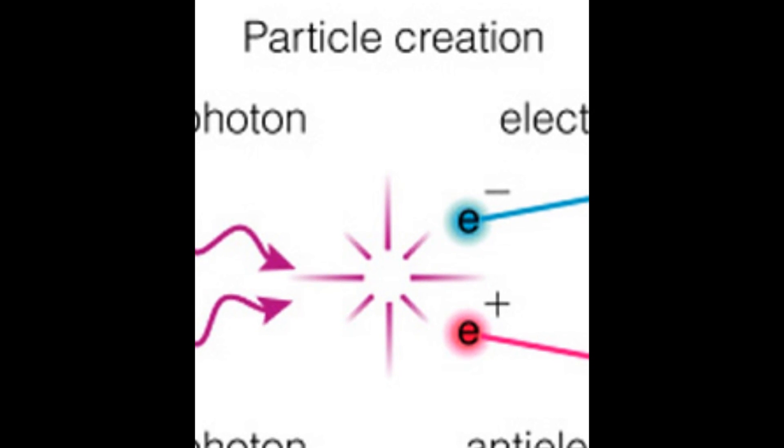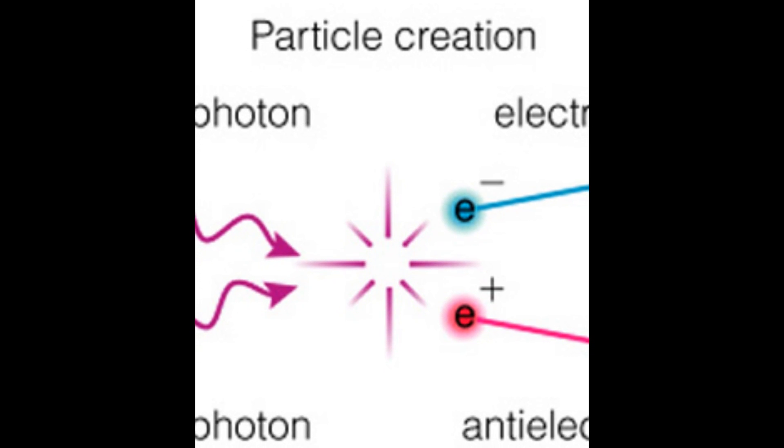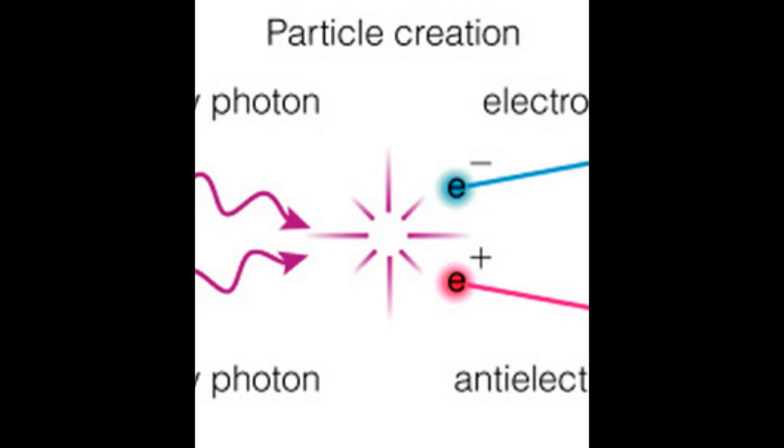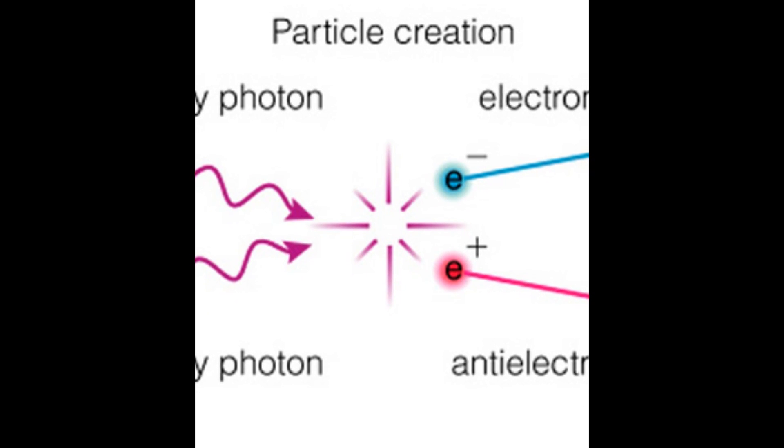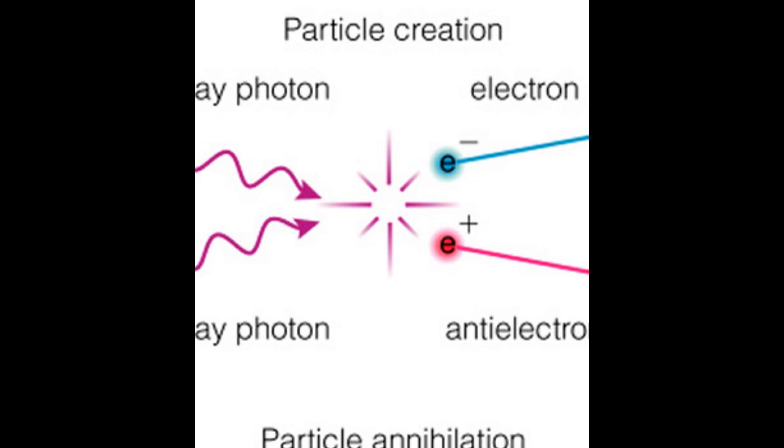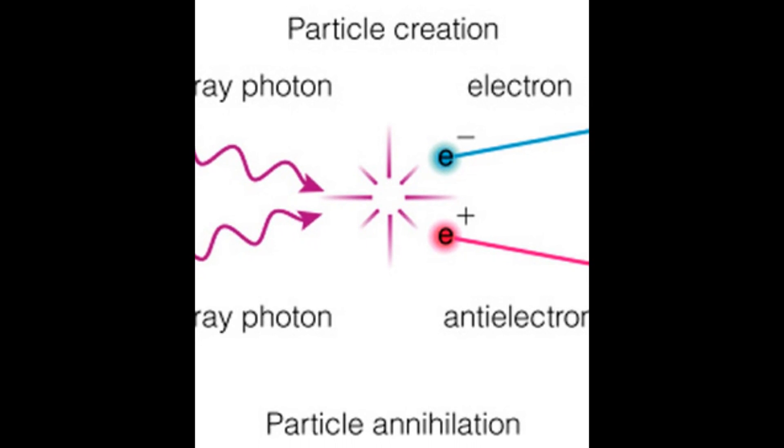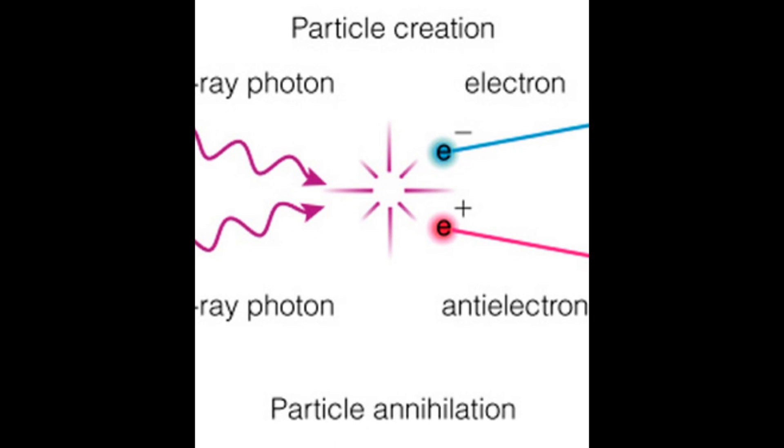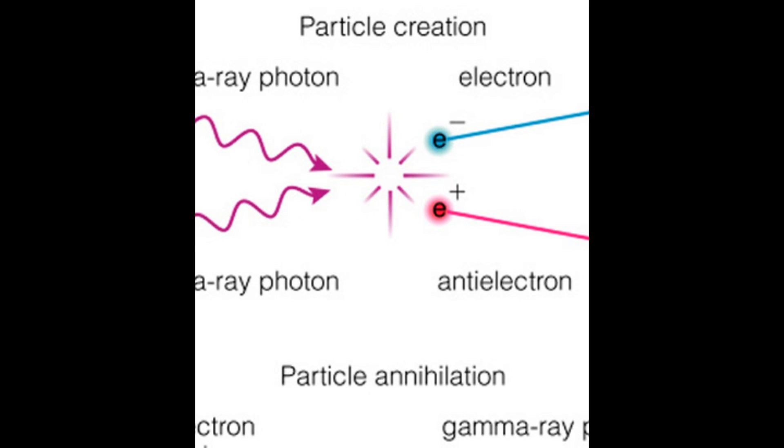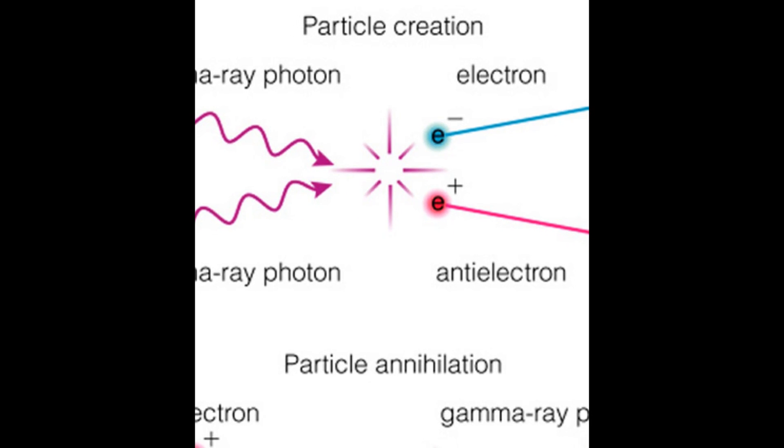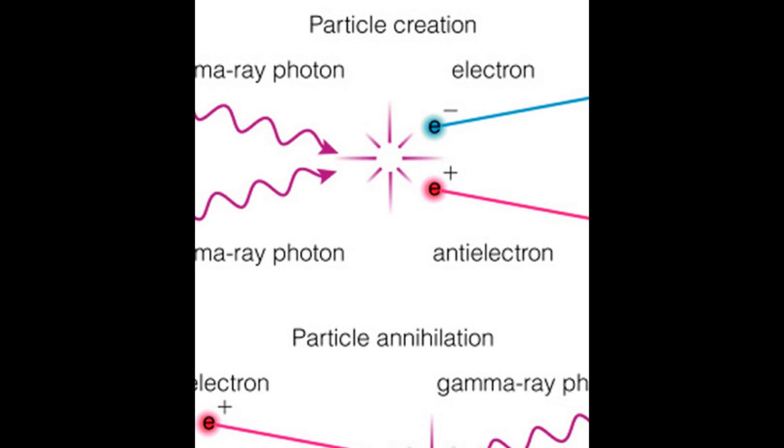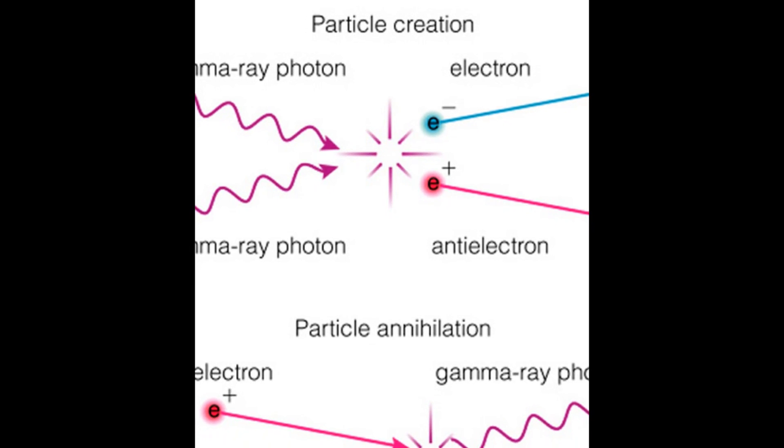Until 4.12 seconds after the Big Bang, the temperature was so high that the average thermal energy per particle exceeded the rest mass energy of electrons and positrons. That is, the thermal energy per particle exceeded E equals mc squared, where m is the mass of an electron. Consequently, electron-positron pairs were constantly being created. Once created, the electrons and positrons would eventually find their antiparticle partner and annihilate back into thermal energy. After 4.12 seconds after the Big Bang, there wasn't enough thermal energy to create new electron-positron pairs.